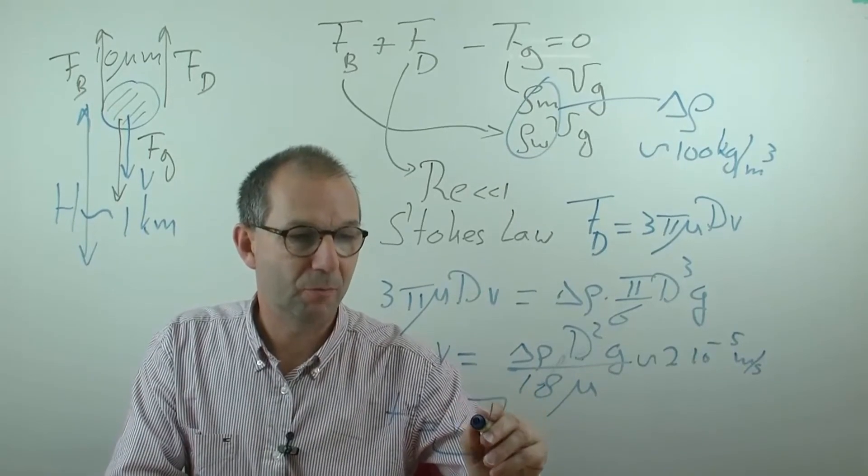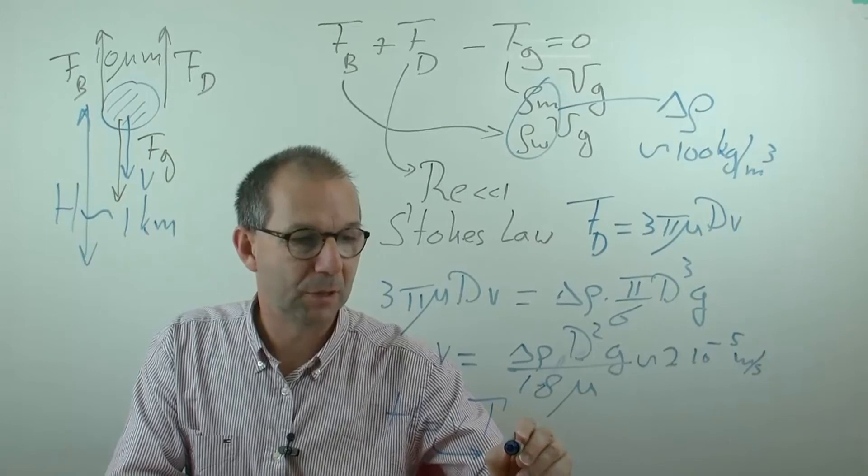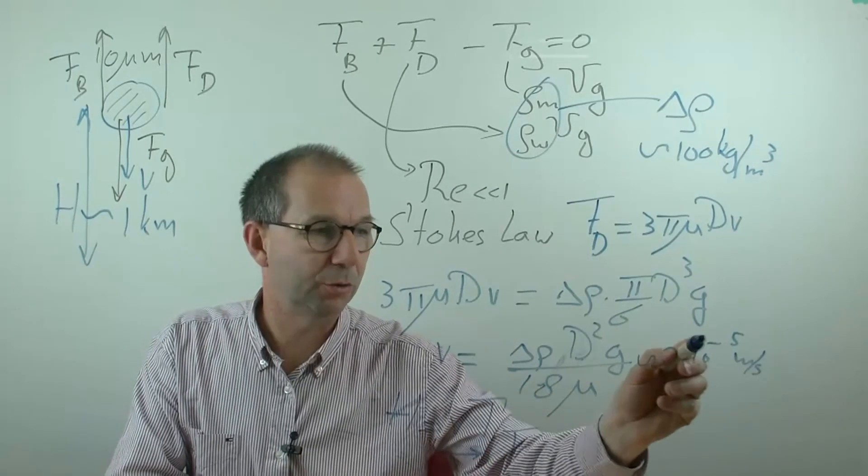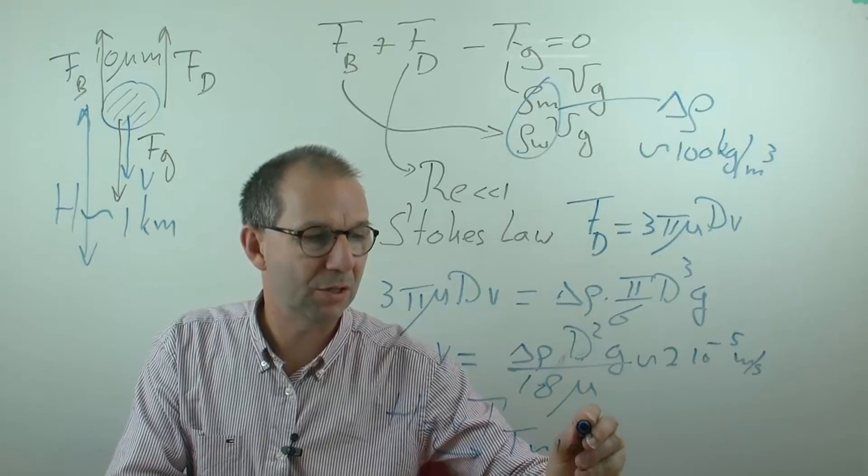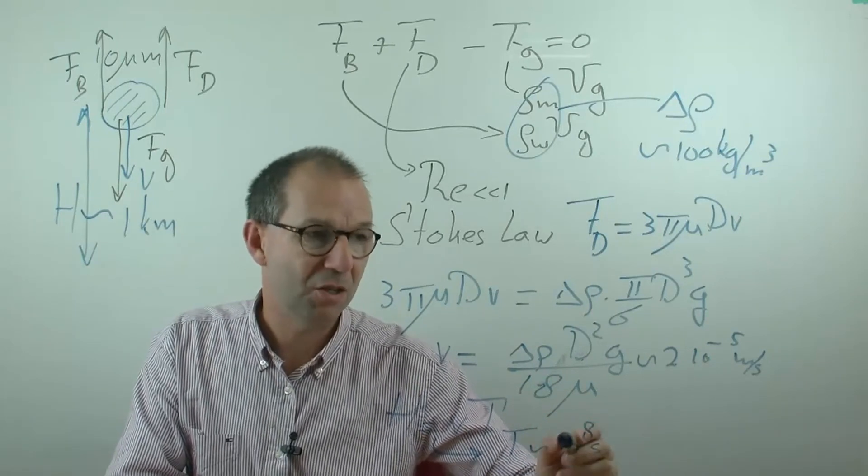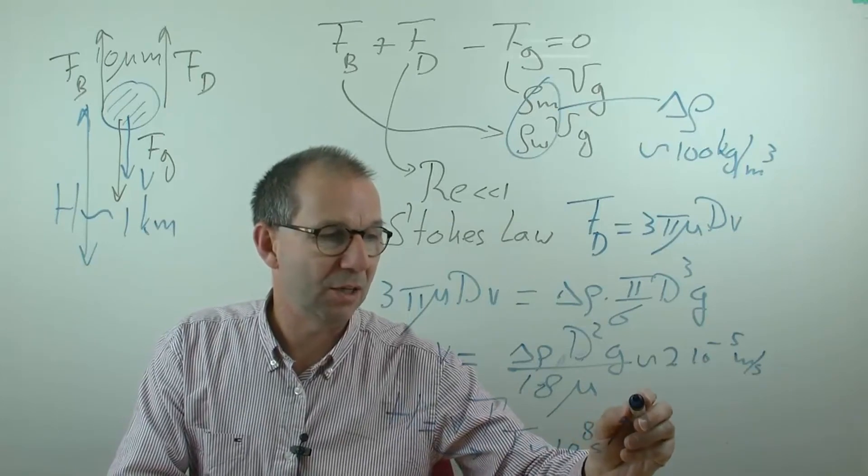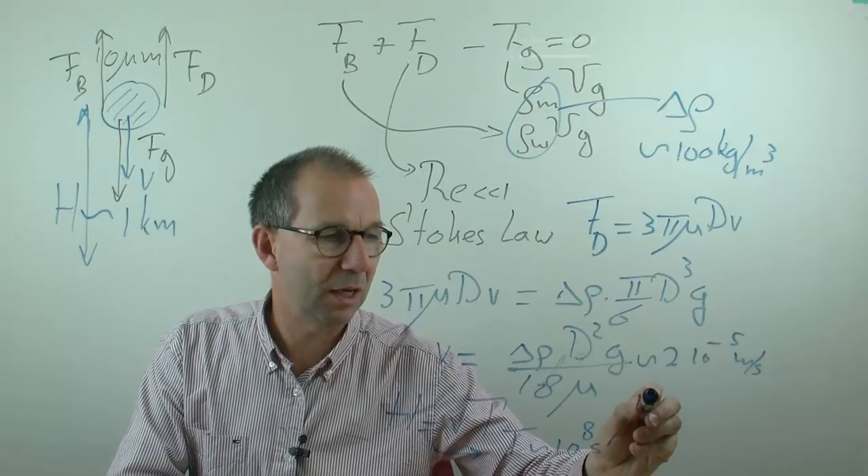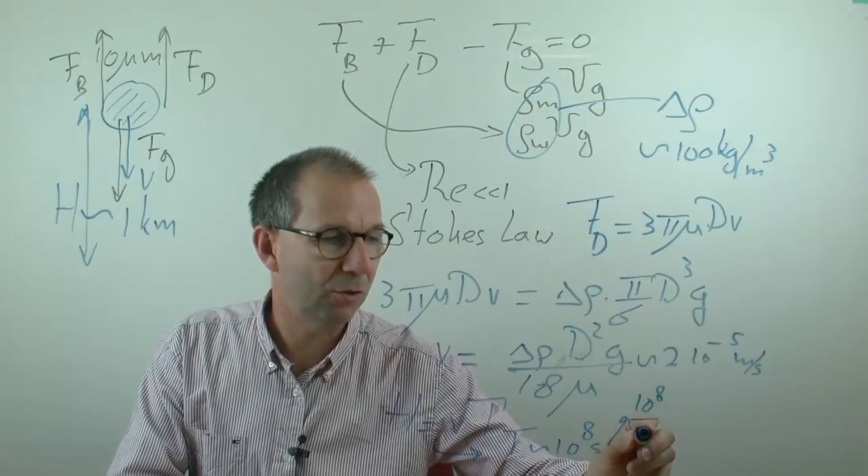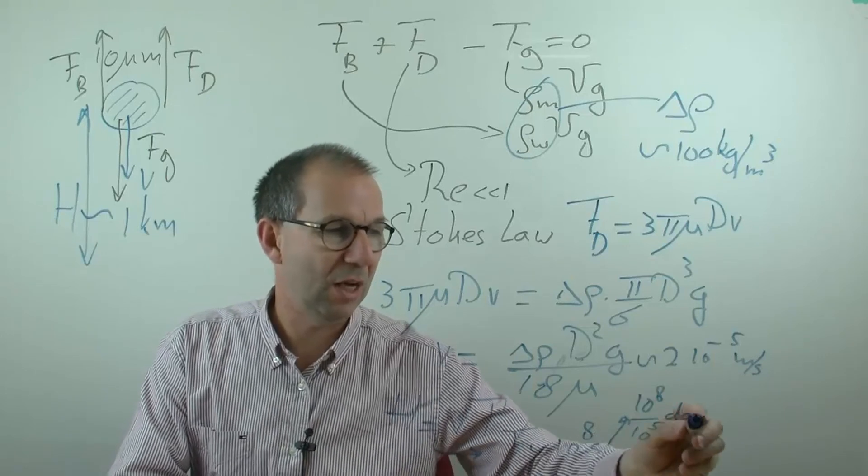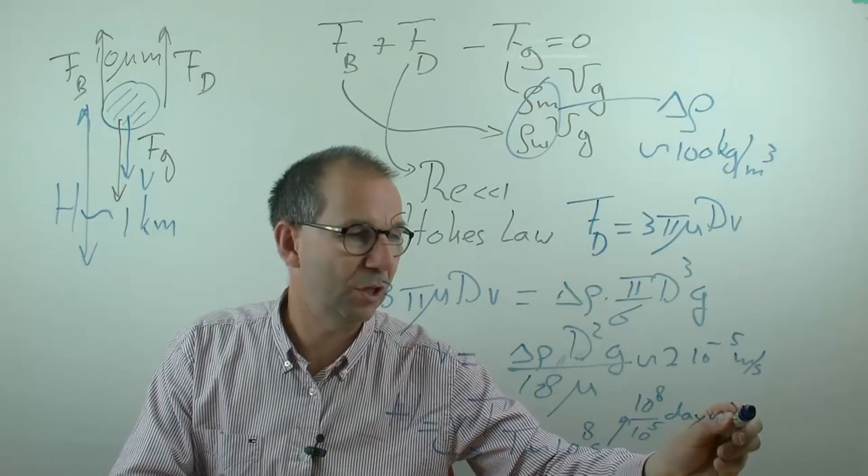Out of this, we can compute the time. T is on the order of a kilometer over this velocity, about 10 to the 8th seconds. Is that much? Let's turn that into days. That is roughly 10 to the 8th seconds over 10 to the 5th seconds in a day. A thousand days, roughly 3 years.